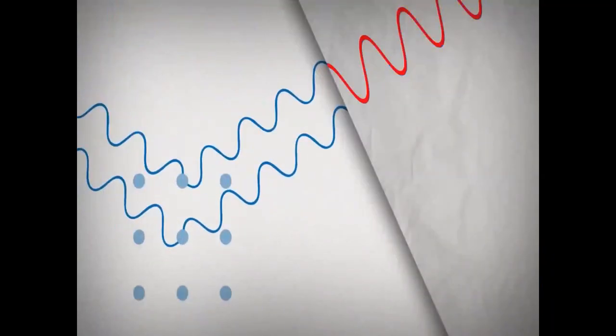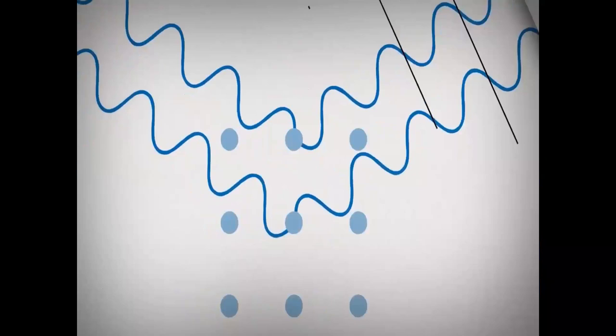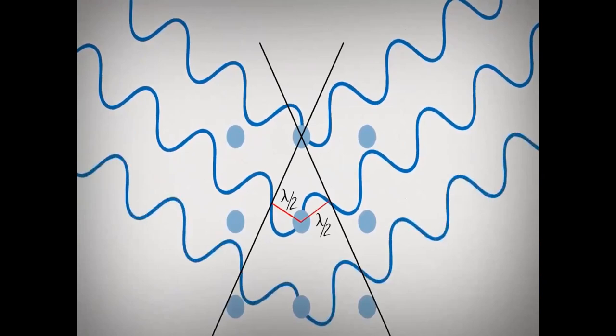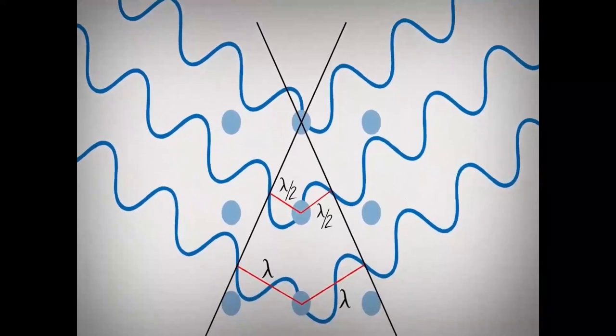In order for constructive interference to occur, the scattered waves must be in alignment, meaning that the second wave must travel a whole number of wavelengths. In this case, one half of a wavelength is traveled on the incident side and one half on the scattered side, yielding one additional wavelength. In the case of the next X-ray, one wavelength is traveled on both the incident and the scattered side, resulting in two wavelengths. This reinforcement occurs throughout the crystal.